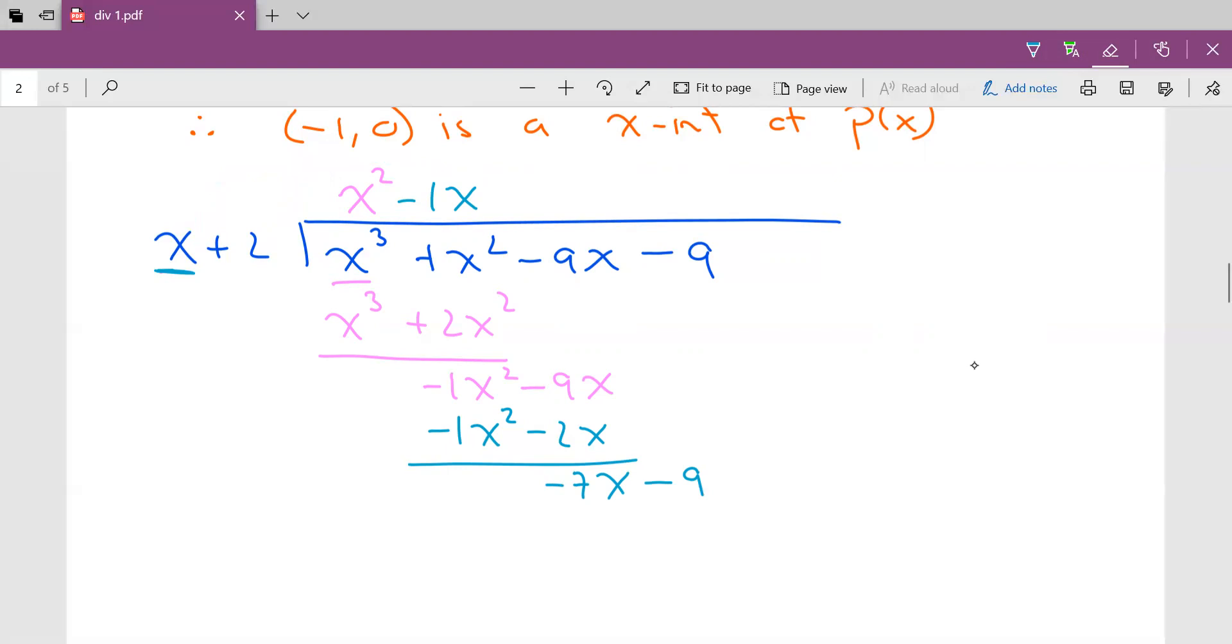And repeat. Again, division's just an algorithm. So now I say to myself, what do I multiply x by to get -7x? -7. So I do the multiplication. -7 times x is -7x, -7 times 2 is -14. I subtract. -7x subtract -7x is 0. -9 subtract -14 is positive 5. Okay, that's our remainder right here.